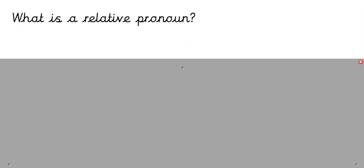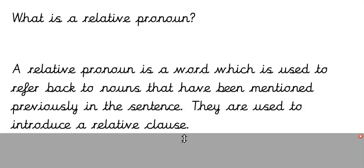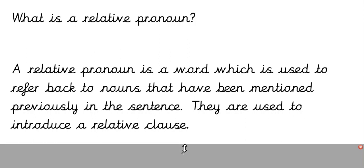Let's remind ourselves — what is a relative pronoun? We can think of some examples: that, who, which, where, when. A relative pronoun is a word which is used to refer back to the nouns that have been mentioned previously in the sentence. They are used to introduce a relative clause, and they come after the noun that they are referring to.